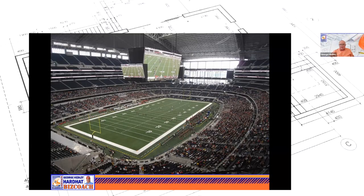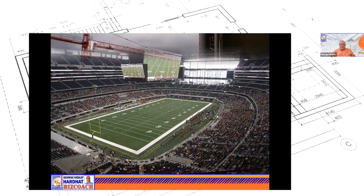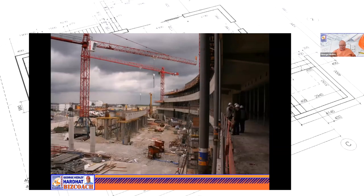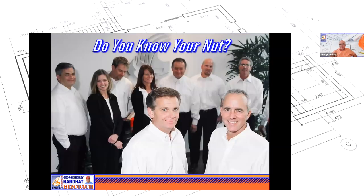If you own the Dallas Cowboys — I've been to that stadium, I took the tour, I took one of my coaching groups there, it was really incredible — Jerry Jones knows his overhead. He knows what it costs and how much revenue he needs to pay for that billion-dollar building. In construction, you need to know the same thing: what it needs to cost, how much sales you need, how much labor, how much margin and markup, and what your overhead is.